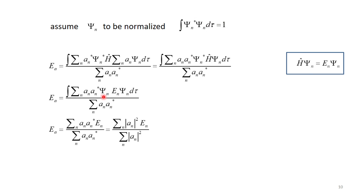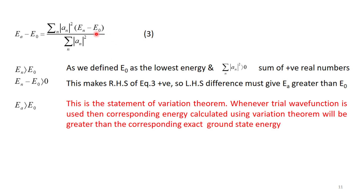What we have left is Eₐ = Σ |aₙ|² Eₙ. On both sides of this equation, we subtract E₀, the ground state energy, to get the final relation, equation 3: Eₐ − E₀ = Σ |aₙ|² (Eₙ − E₀).